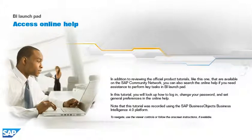In addition to reviewing the official product tutorials, like this one, that are available on the SAP Community Network, you can also search the online help if you need assistance to perform key tasks in BI Launchpad. In this tutorial, you will look up how to log in, change your password, and set general preferences in the online help. Note that this tutorial was recorded using the SAP Business Objects Business Intelligence 4.0 platform. To navigate, use the viewer controls or follow the on-screen instructions, if available.